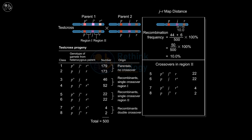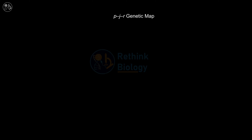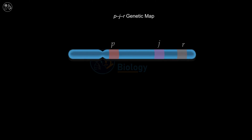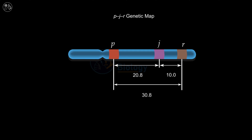A genetic map of the three genes P, J, and R has been created. The map distance between P and J is 20.8 cM, and the map distance between J and R is 10.0 cM. Adding these two together gives a total map distance between P and R of 30.8 cM.